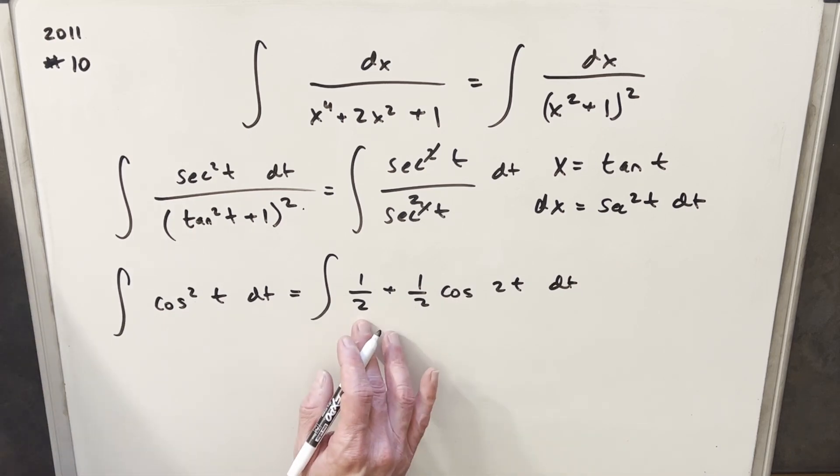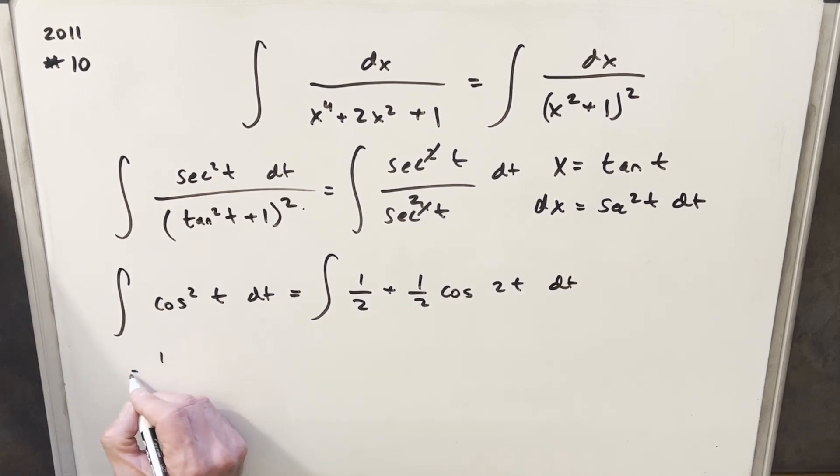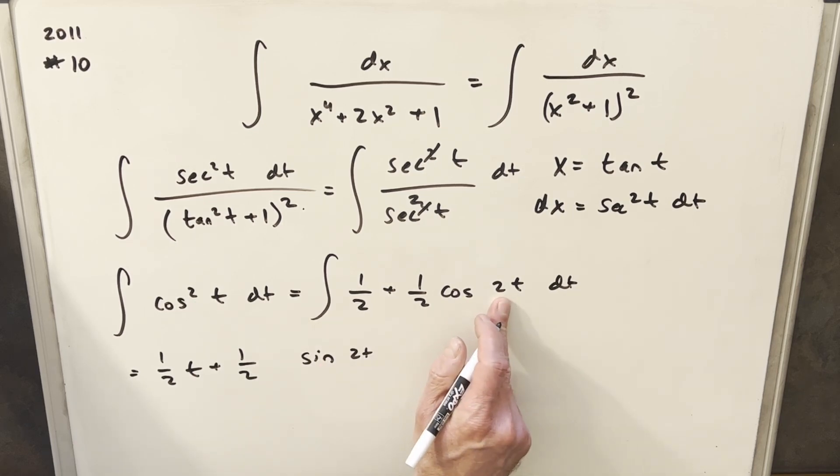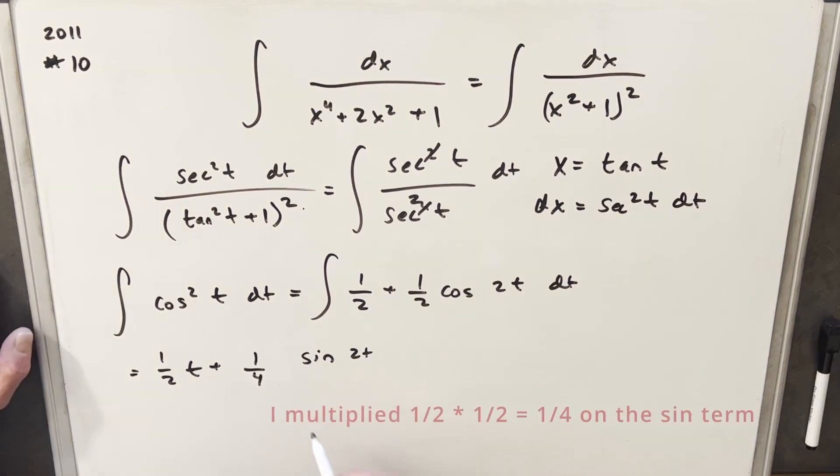Then we'll go right into integrating this. So integral here of a half, we're going to have half t plus here we're going to have a half. Integral of cosine 2t is going to be sine 2t, but don't forget about this 2 here. We'll bring that out as another half. And I think it's going to help me out a little bit if I take this sine of 2t and I use a formula on that, and we'll rewrite this, we can use the double angle formula there.